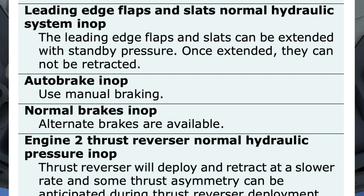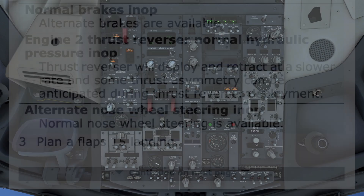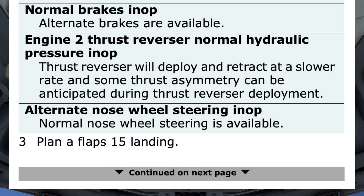Auto brake inoperative — use manual braking. Normal brakes inoperative — alternate brakes are available. Engine 2 thrust reverser — normal hydraulic pressure inoperative. Thrust reverser will deploy and retract at a slower rate, and some thrust asymmetry can be anticipated during thrust reverser deployment. Alternate nose wheel steering inoperative — normal nose wheel steering is available.